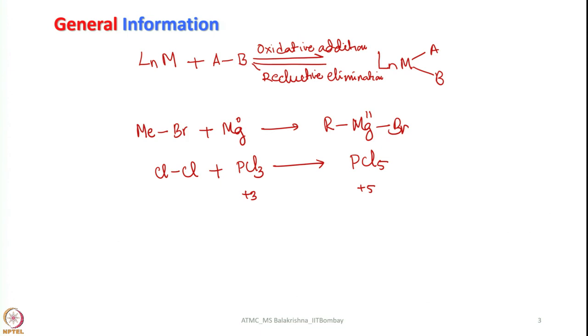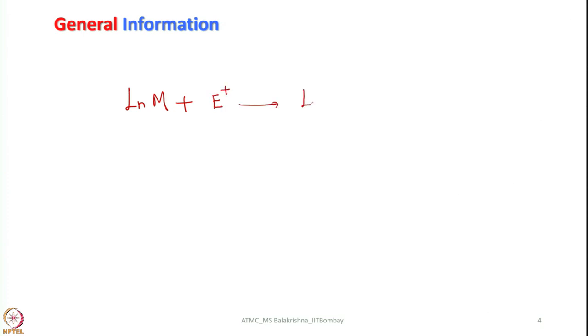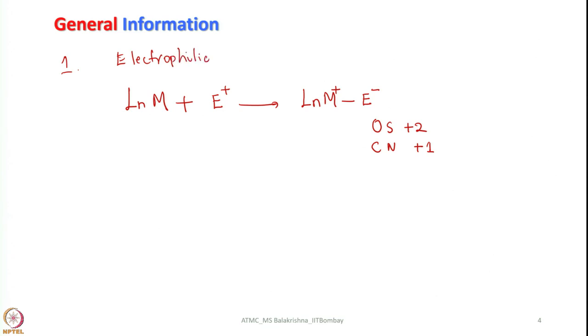Before I write point by point the conditions, the nature of the ligands and nature of the metal, let us look into a few more reactions. Let us consider a general equation: ancillary ligands Ln means we have Ln number of ancillary ligands, plus an electrophile E+ comes and then we have a reaction. In this also, if you see, oxidation state increases by plus 2 and coordination number increases by plus 1 in this case. This is a typical electrophilic attack on metals.